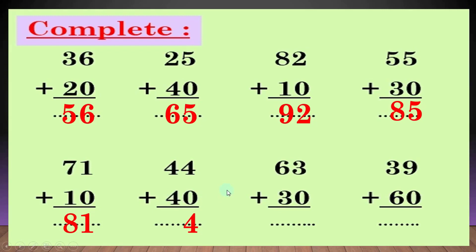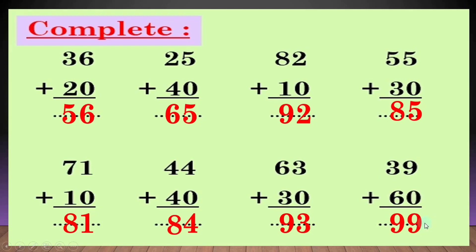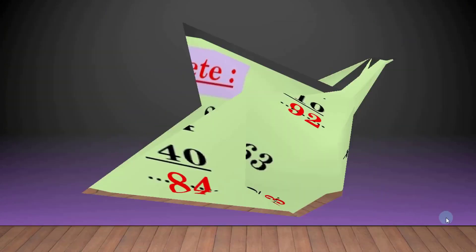another question: 44 plus 40. 4 will be down. 4 plus 4: بعد 4، 5، 6، 7، 8. يبقى الانسر طلع 84. another question: 63 plus 30. 3 will be down. 6 plus 3: بعد 6، 7، 8، 9. يبقى الانسر طلع 93. the last question: 39 plus 60. 9 will be down. 3 plus 6: بعد 6، 7، 8، 9. يبقى الانسر طلع 99.